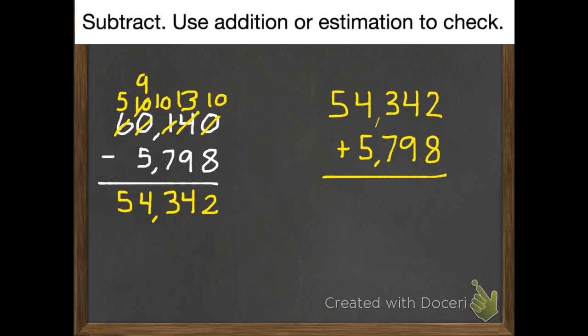2 plus 8 is 10. 1 plus 4 plus 9 is 14. 1 plus 3 plus 7 is 11. 1 plus 4 plus 5 is 10. And 1 plus 5 equals 6. So we get 60,140. We're going to choose what we wanted to get.